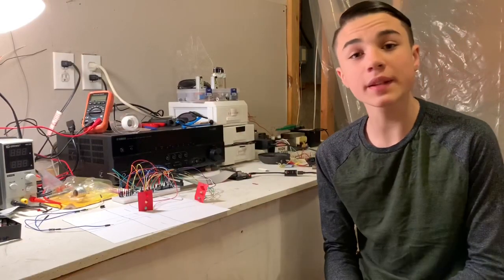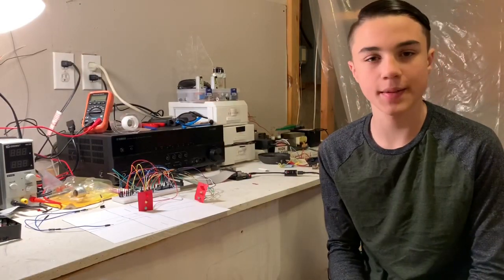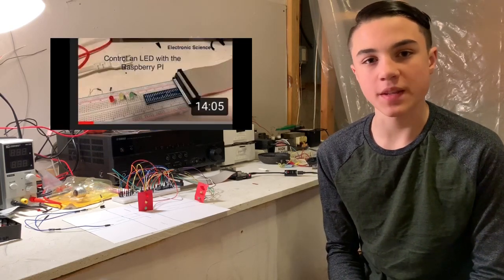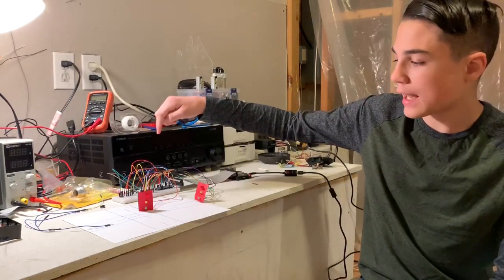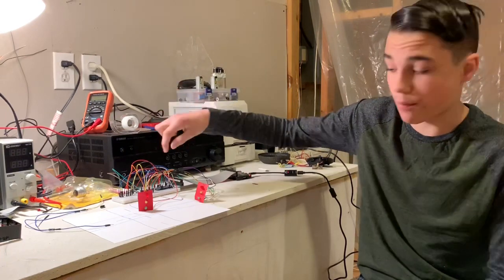Hello everybody and welcome back to another video on Electronic Science. Today we're taking a look at this two-way traffic light system. If you look back at my first video when we made a traffic light system with the Raspberry Pi, which is what we're using today to control the system, you saw that I used this breadboard over here but I had the LEDs physically plugged into the breadboard.